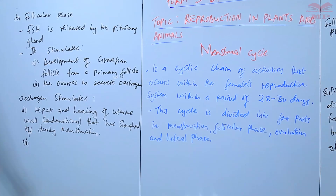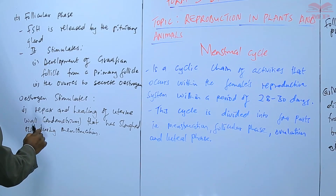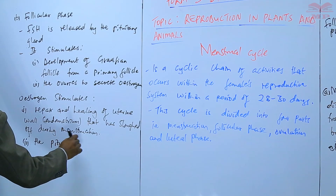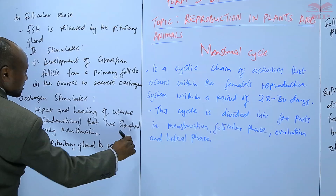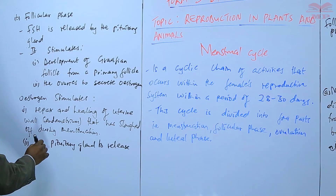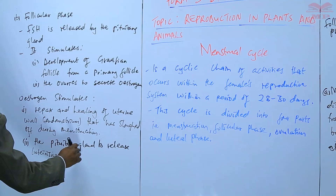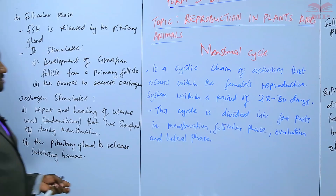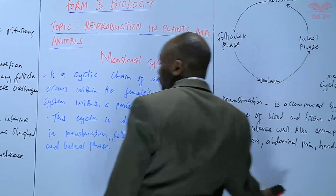Secondly, estrogen stimulates the pituitary gland to release a luteinizing hormone (LH). This is what takes us to the next phase — ovulation.